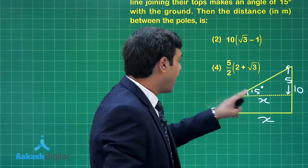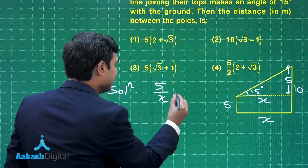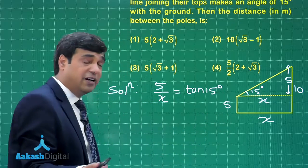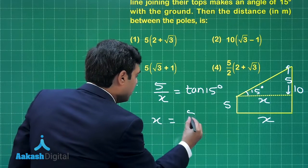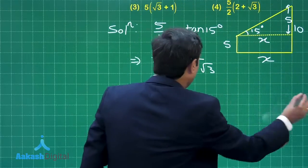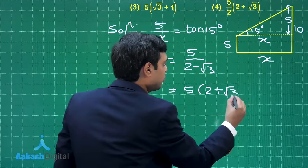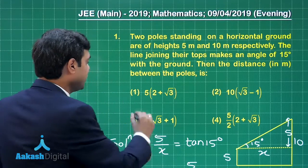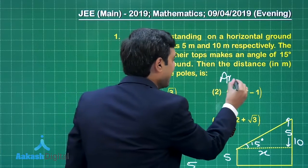Simple trigonometry: tan 15° = 5/x, so x = 5/tan 15°. The value of tan 15° is 2 − √3, so x = 5/(2 − √3). After rationalization, this gives x = 5(2 + √3) meters. From the given options, 5(2 + √3) is option number 1, which is the correct answer.